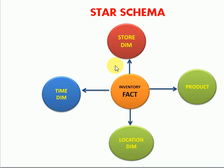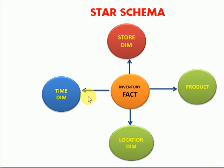In star schema, you can identify dimension and fact tables. The fact table will be surrounded by multiple dimension tables. When you look at the diagram, it looks like a star — that is what we call star schema. Here, there is always a relationship between dimension to fact, and there is no dimension-to-dimension relationship.